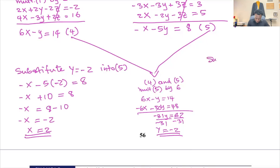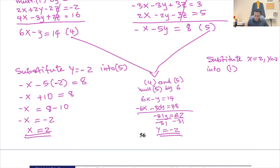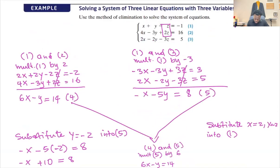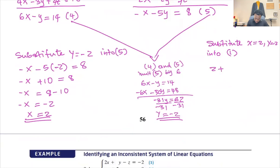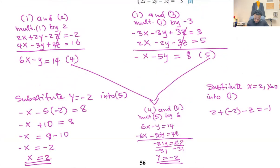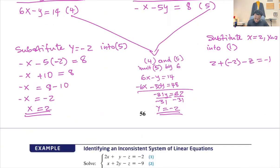Now we have x equals two and y equals negative two. We substitute into equation one to find z. Equation one is x plus y minus z equals negative one. So two plus negative two minus z equals negative one. That gives negative z equals negative one, so z equals one.